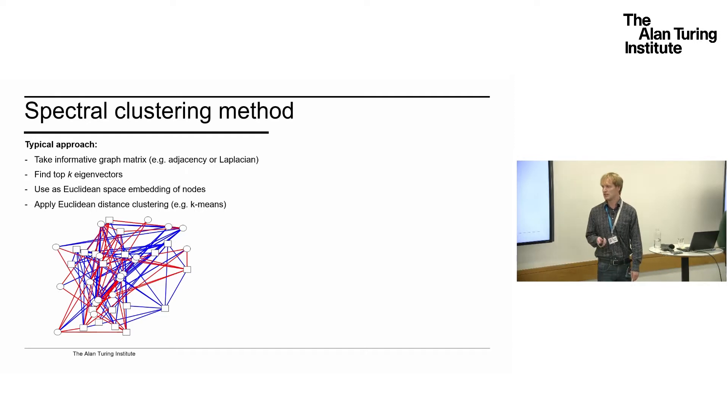This is a randomly generated graph based on a model we'll see in the next slides. There are two planted communities: the squares and the circles. Blue edges are positive, red edges are negative. If you look closely, you'll notice blue edges between nodes of the same type and red edges between different types. There is some noise, but it's sufficiently structured that we should be able to recover the two communities.